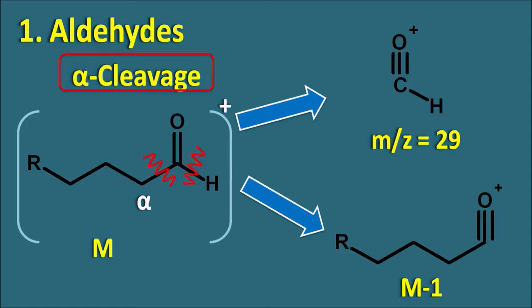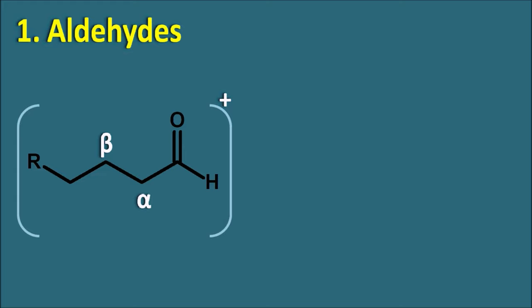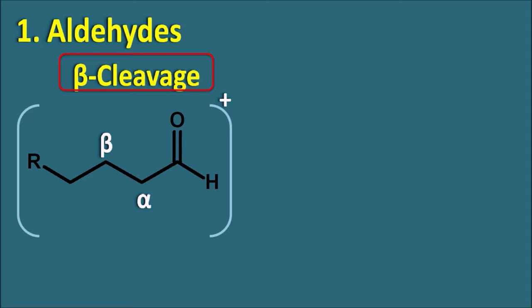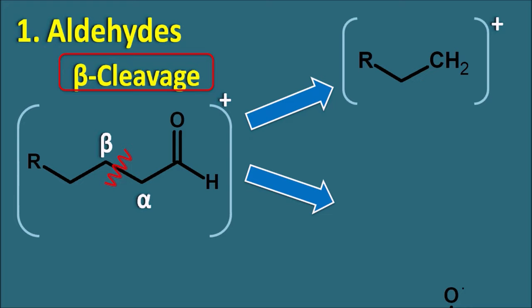Another fragmentation pattern in aldehydes involves the alpha and beta carbons. Between the alpha and beta carbon there may be a cleavage — this is called beta cleavage. Aldehydes can undergo fragmentation at this point to release one fragment ion with positive charge along with a neutral molecule. The m/z value of the fragment ion is calculated from the neutral fragment: CH2 is 14, another carbon is 12, so 14 plus 12 is 26; plus oxygen (16) gives 42; plus one hydrogen gives 43.